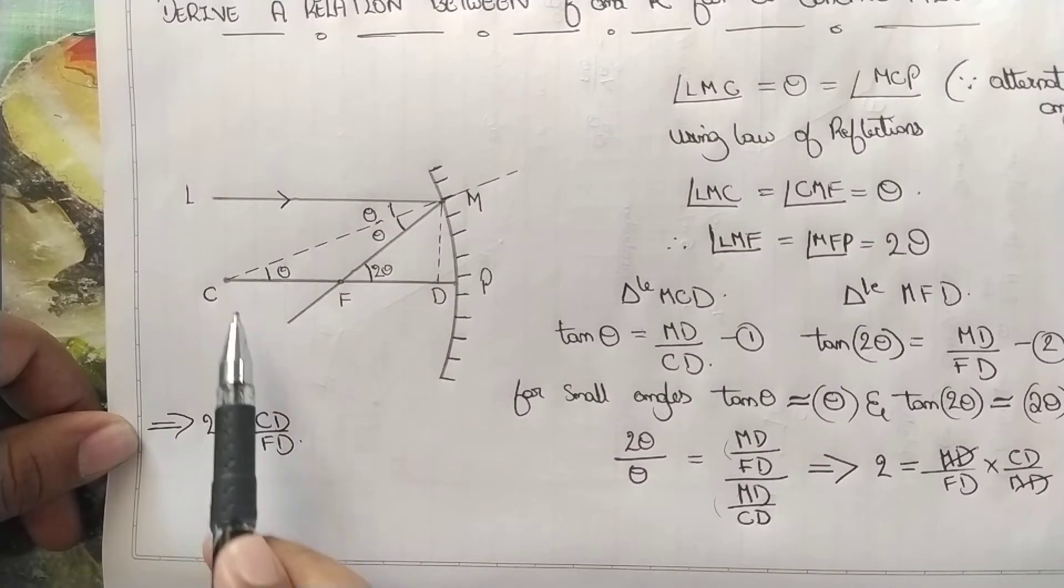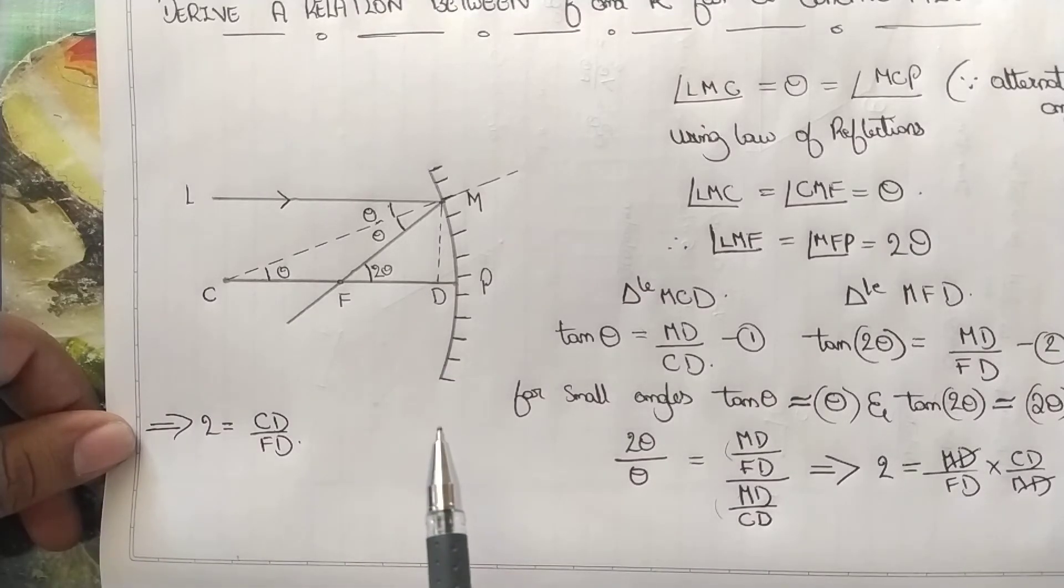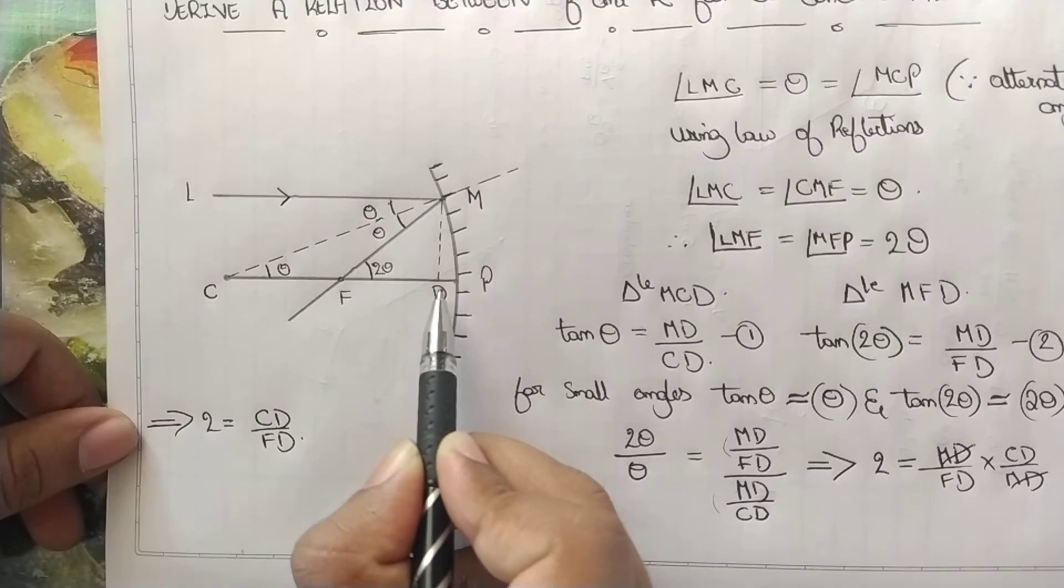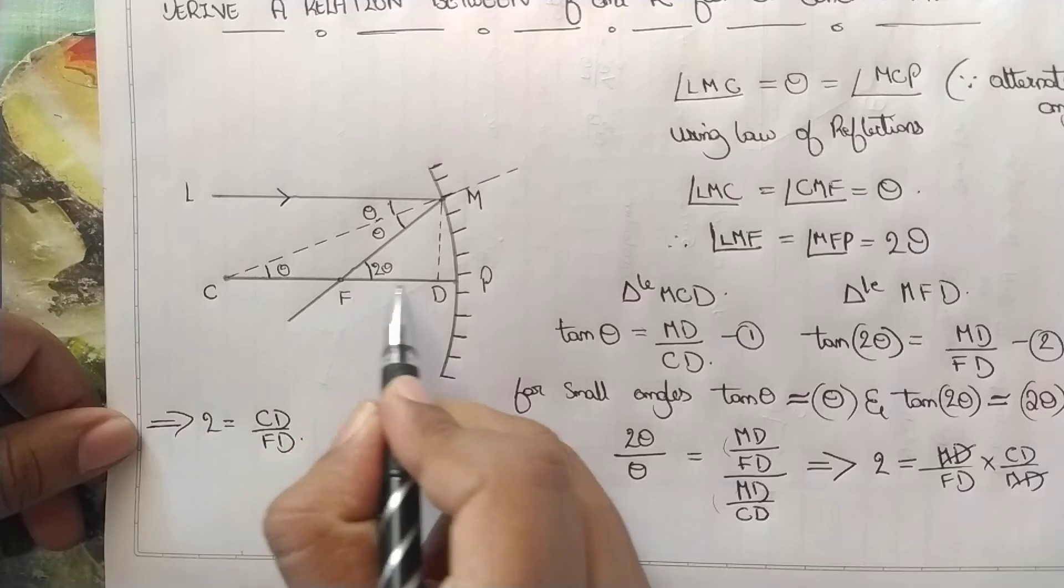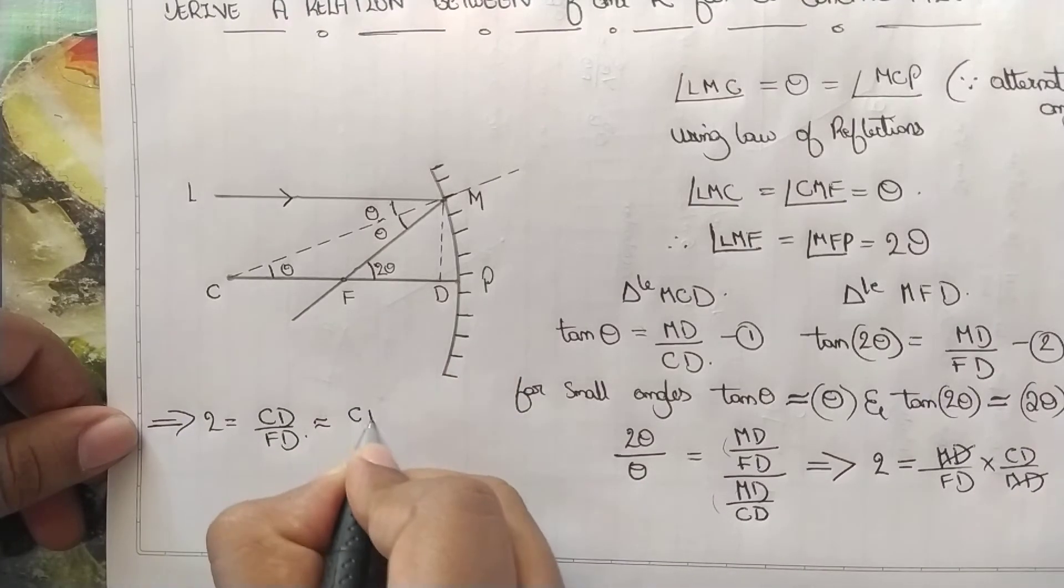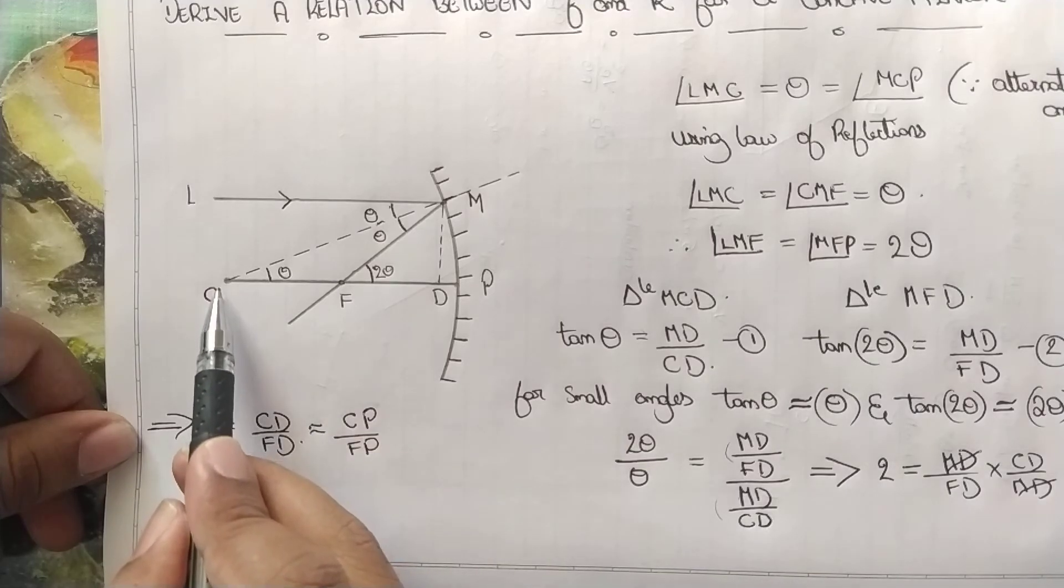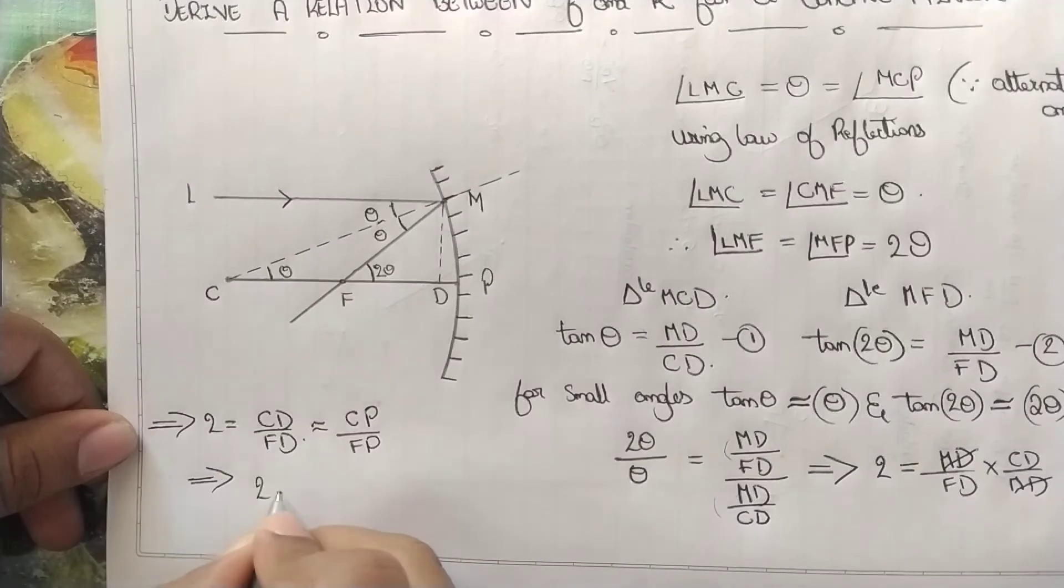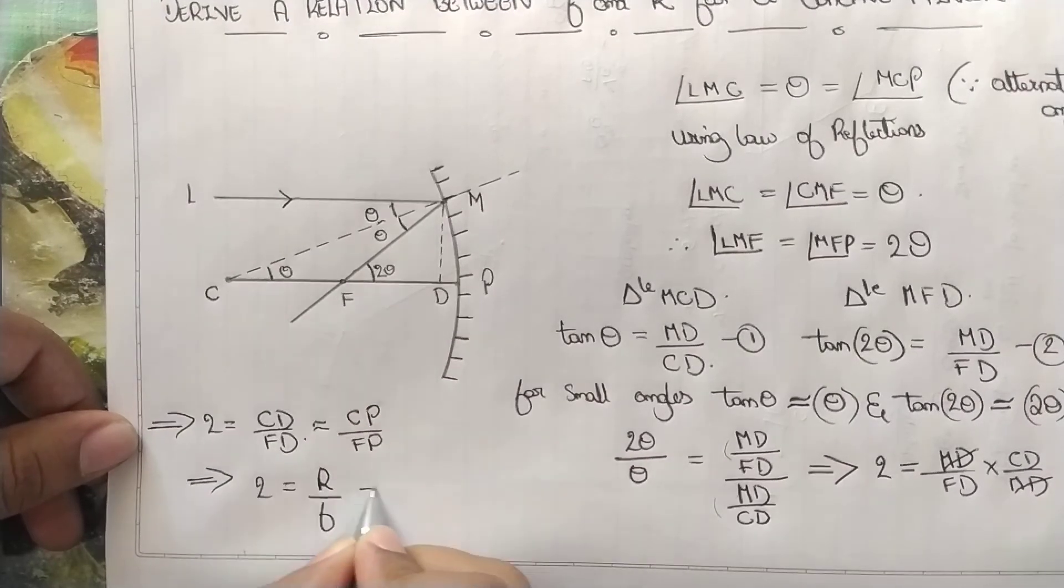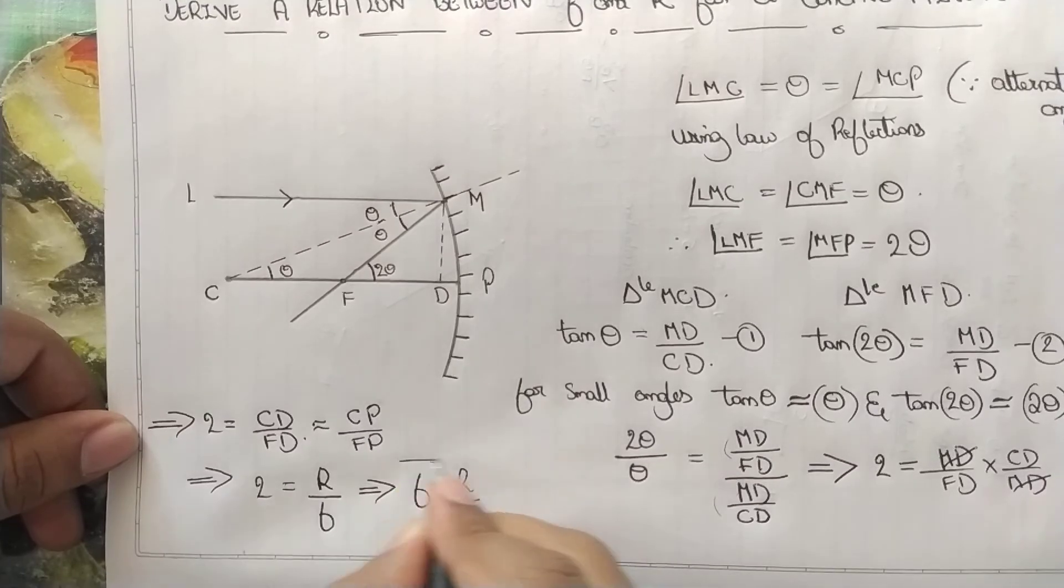Now what is CD? From the center of curvature to D. And what is FD? From the focal length to D. Here another assumption is made: the distance between D and point P is too small. So the distance FD and CD is equivalent to CP and FP. From basic concepts of ray optics, CP is the distance from center of curvature to P, which is R. And FP is F. From this, F equals R by 2. We obtain the final derivation.